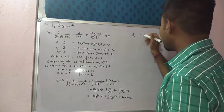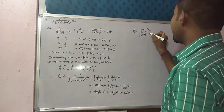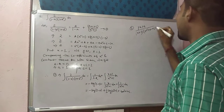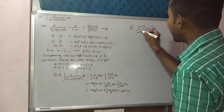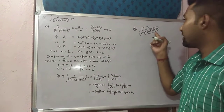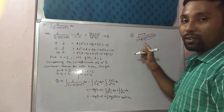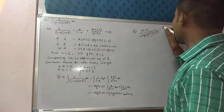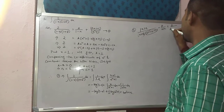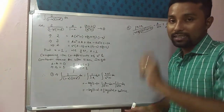The expression for point 5 was: (px + q) by (x + a) into (ax square + bx + c), like this. Or you can say x plus k. Where ax square + bx + c is of course a quadratic expression which cannot be factorized. If the integrand is of this form, then you have to consider: a by (x + k) plus (bx + c) by (ax square + bx + c). This is the fifth point of that table.